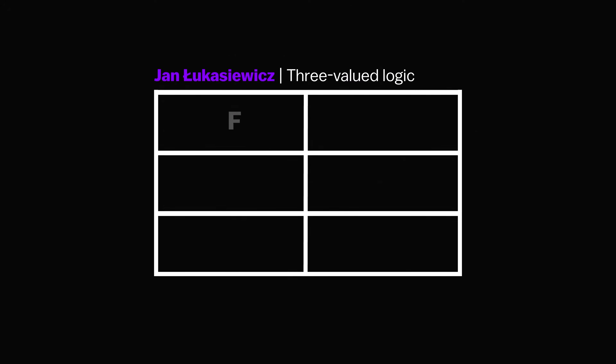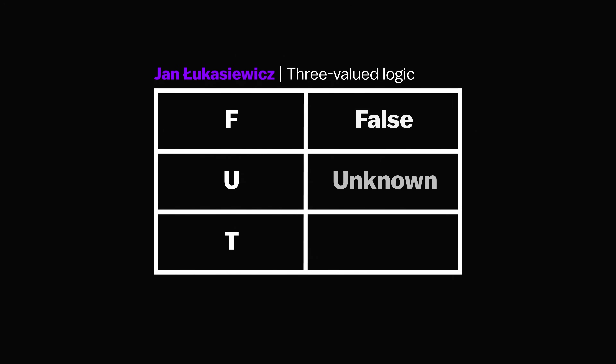In three-valued logic, truth values can be represented in numerous ways depending on the definition. To keep things simple, we'll use the abbreviations F, U, and T for false, unknown, and true. These map nicely onto balanced ternary notation.